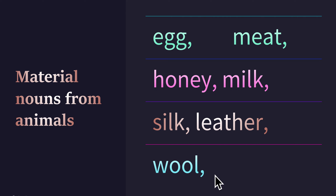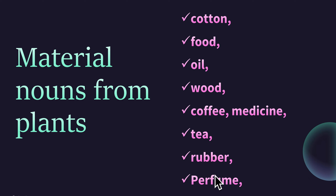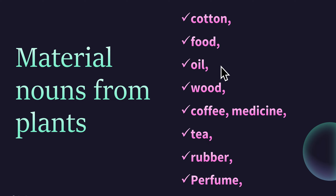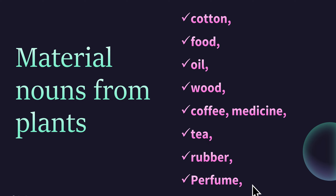Material nouns from plants: cotton, food, oil, wood, coffee, medicine, tea, rubber, perfume, and so on.